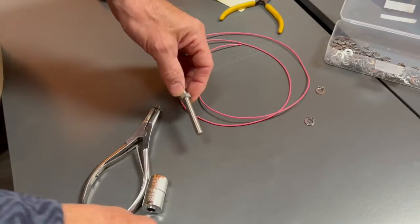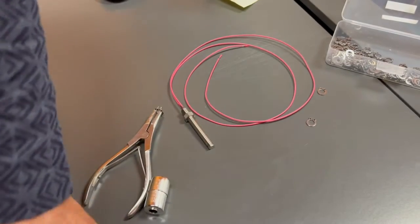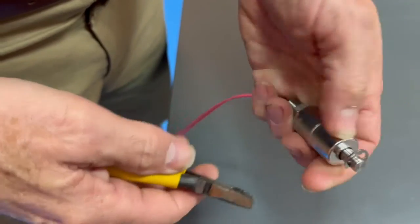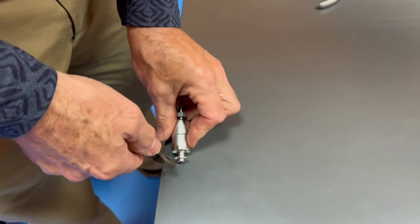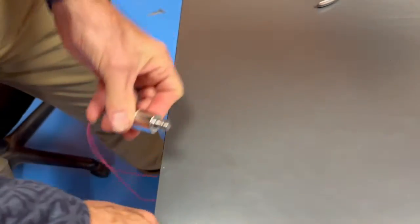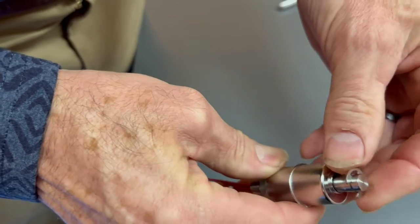So we'll deal with the E-clip first, and it's a simple matter of pressing it on. Some movement there, that's no good. So we're going to push it down a little bit more. There. So that's a secure E-clip.